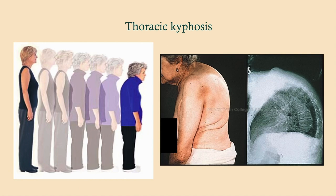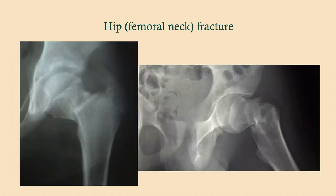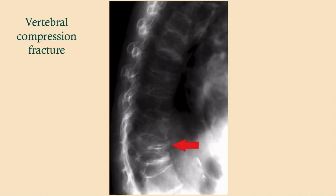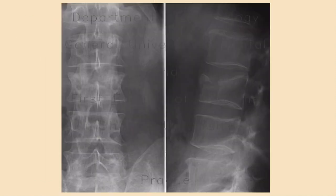Thoracic kyphosis — the hunchback appearance — is due to progressive weakening and fractures of the weight-bearing vertebral bodies. Also shown are a hip fracture and a vertebral compression fracture, with an arrow pointing to it.